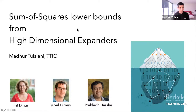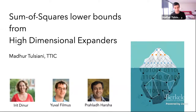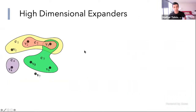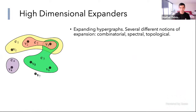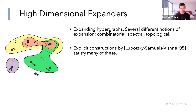Welcome everyone to the virtual talk. I'll be talking about some connections between the sum of squares hierarchy and certain pseudorandom objects called high dimensional expanders. This is joint work with Irit Dinur, Yuval Filmus, and Prahlad Harsha. High dimensional expanders are notions of expanding hypergraphs. There are quite a few different definitions of what it means to be an expander hypergraph, motivated by combinatorial, spectral, and topological considerations. The explicit constructions given by Lubotsky, Samuels, and Vishne satisfy many of these definitions, and those are the ones we will use here.